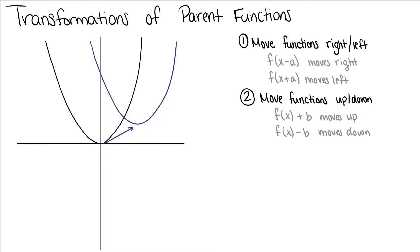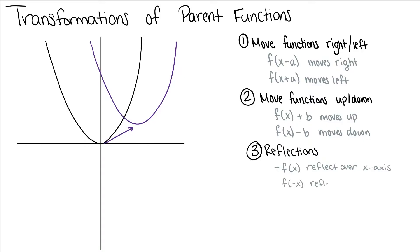We can reflect our functions — over the y-axis or over the x-axis. When we multiply our function by negative 1, that's a reflection over the x-axis. And when we multiply our x by negative 1, that is a reflection over the y-axis.